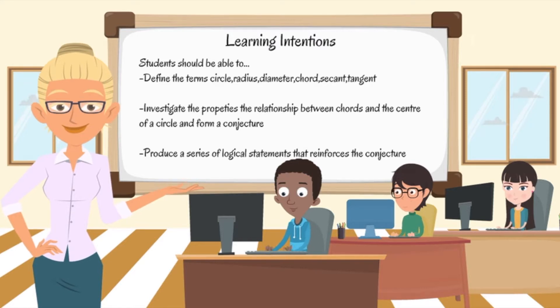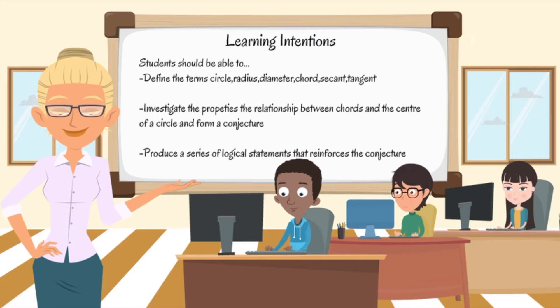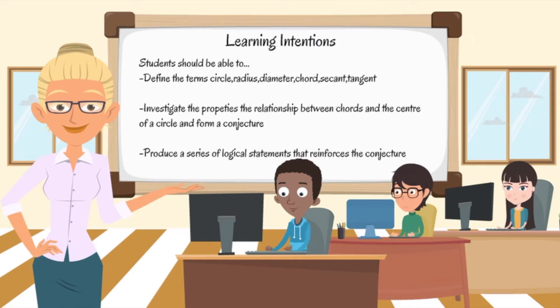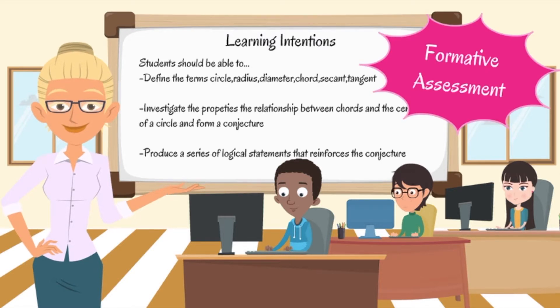The learning intentions for this lesson indicate that by the end of the lesson students should be able to define the terms circle, radius, diameter, chord, secant and tangent, investigate the relationship between the chord and the centre of the circle and form a conjecture, and finally, produce a series of logical mathematical statements that reinforces their conjecture. The introduction of learning intentions informs students about what is expected of them and allows them to self-assess throughout the lesson. This is a form of formative assessment.